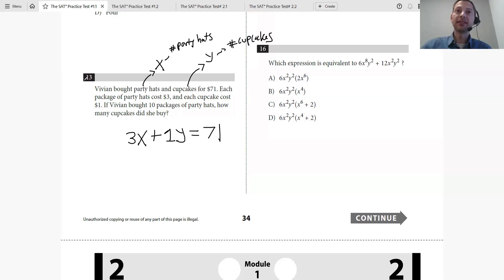Then they say if Vivian bought 10 packages of party hats. So now they're telling me what's X. X is the number of party hats, so they're telling me X is 10. Let's just plug that in.